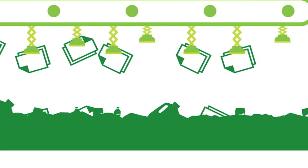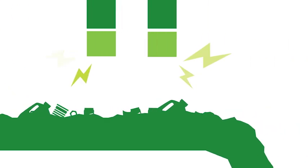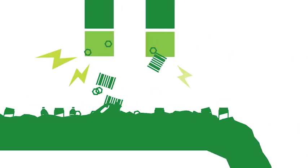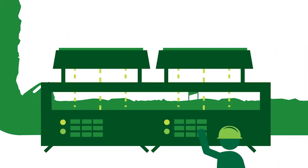Steel items like cans are removed by magnets. The remaining items are run through optical scanners with infrared light that identifies different types of plastics.